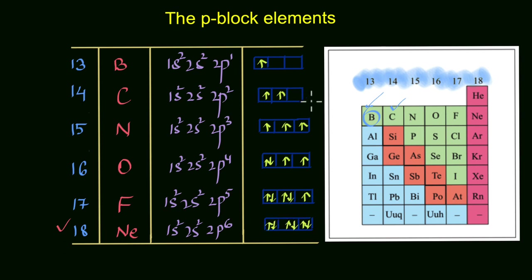Until group 18, where the entire p orbitals get fully occupied. By looking at this, we can easily see that the general outer electronic configuration of p-block elements can be written as ns² np¹⁻⁶. If you have one electron in the p orbital, it's group 13; two electrons, group 14; three electrons, group 15; and so on. Completely filled p orbital means group 18.